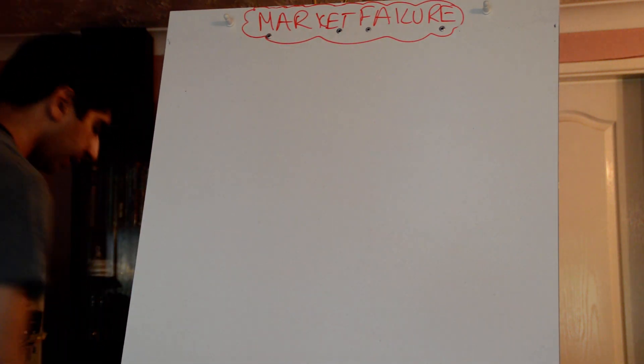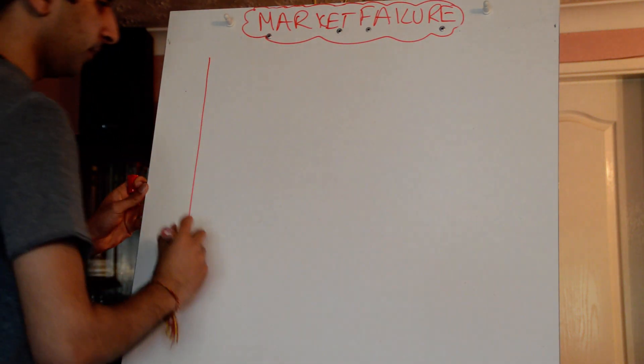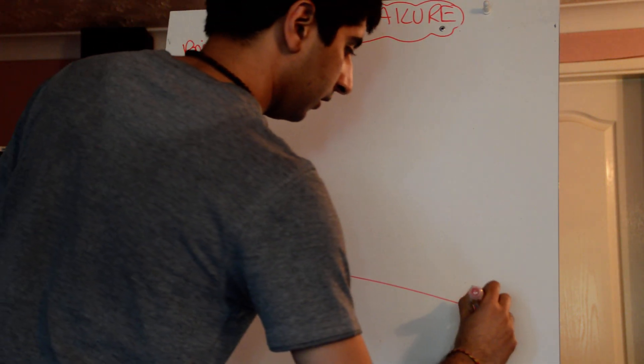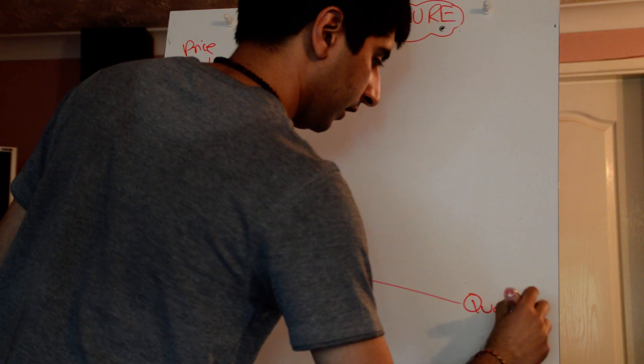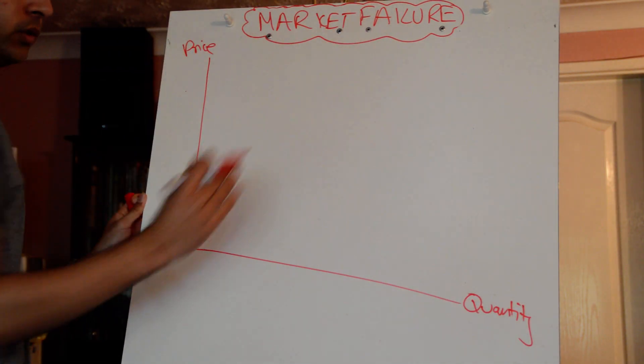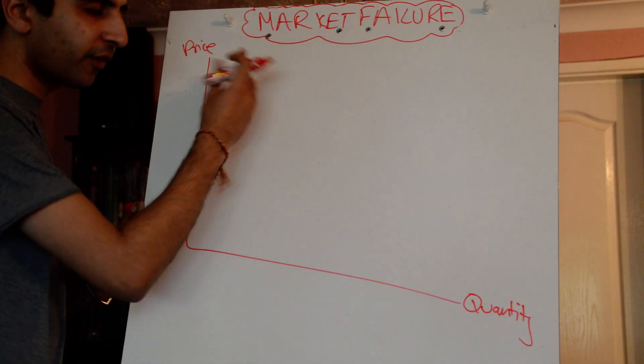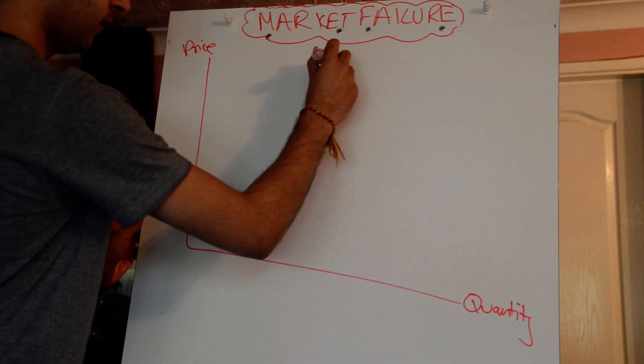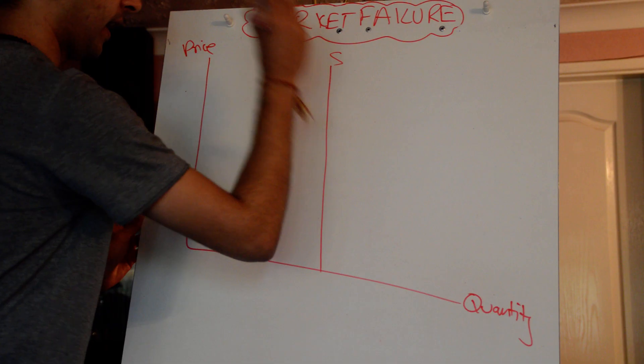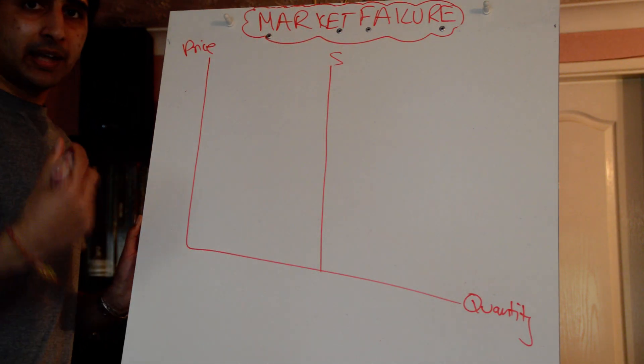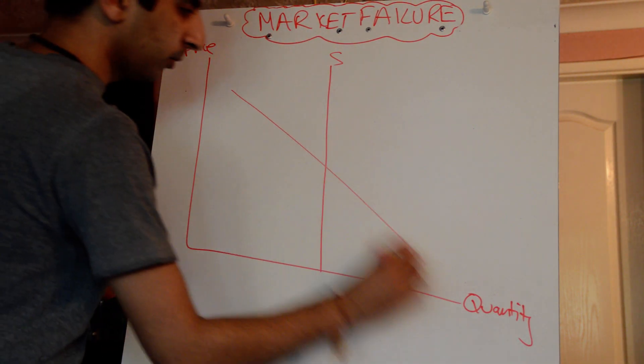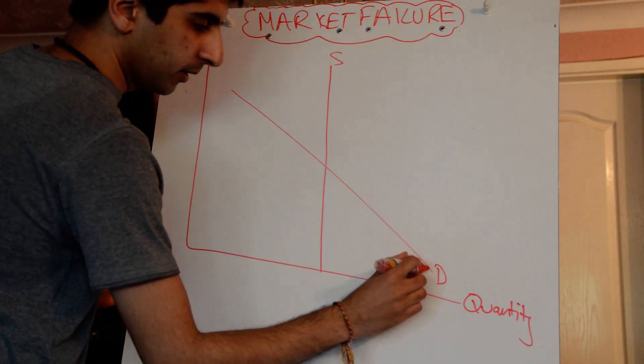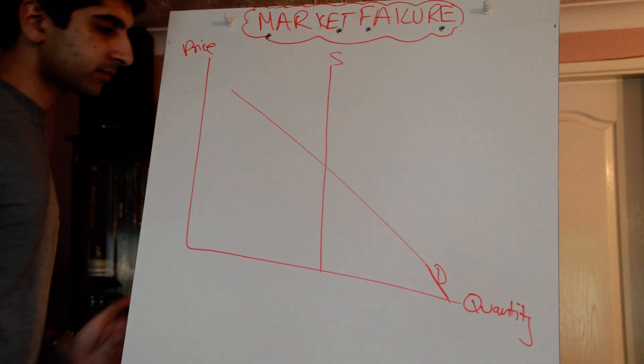So draw a new diagram. If the government intervenes in the market, let's call this price and this quantity. Price, quantity. If the government's providing all the resources, a fixed amount of resources, well supply is going to be vertical, isn't it? Call that S. Demand is just going to be normal - down-sloping demand. I'm actually going to make that go all the way down there.